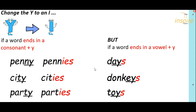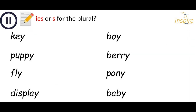However, if the word ends in a vowel and then a Y, like AY, EY, or OY, we just add an S. So a consonant and a Y — we need to change the Y to an I, add ES. If it's a vowel and a Y, just add S. Pause the video and write these words out. Do you need an IES or just an S for the plural? Remember to look for the letter before the Y — is it a vowel or is it a consonant?